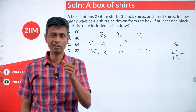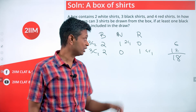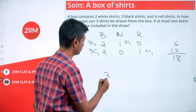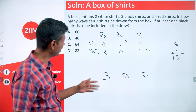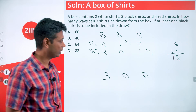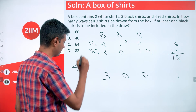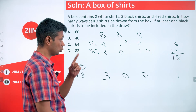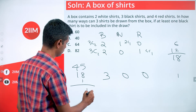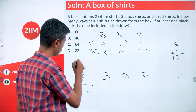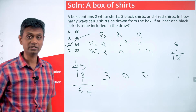So: one black shirt gives 45 ways, two black shirts gives 18 ways. For three black shirts, we select all three — no red, no white — and there is only one way to do this. The total number of ways is 45 + 18 + 1 = 64. That is the answer we are looking for.